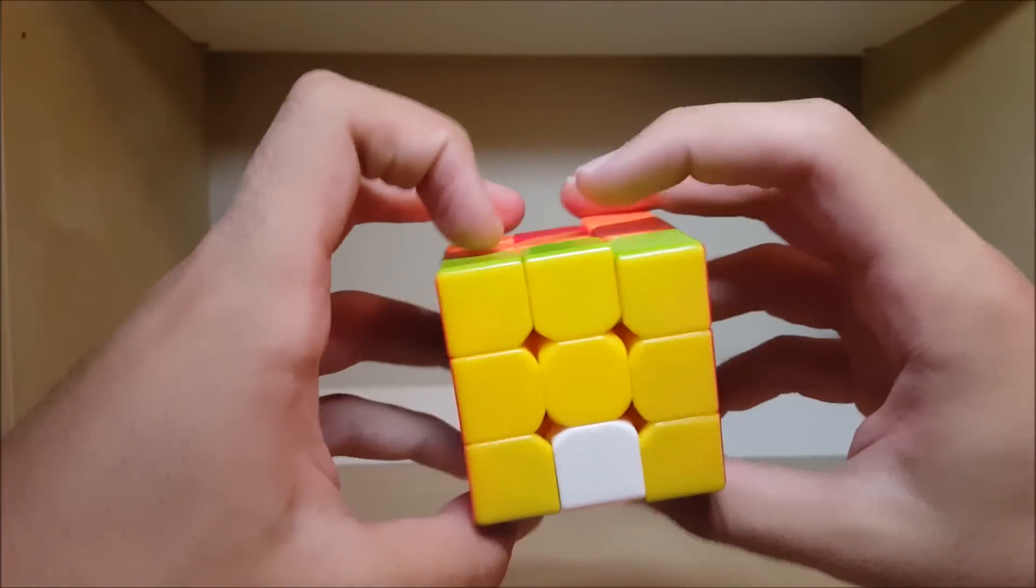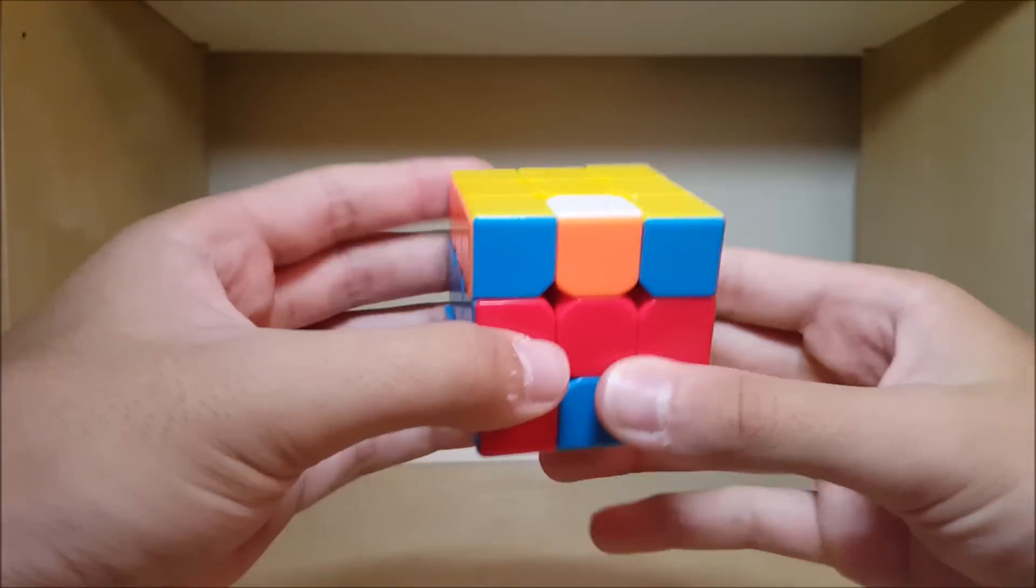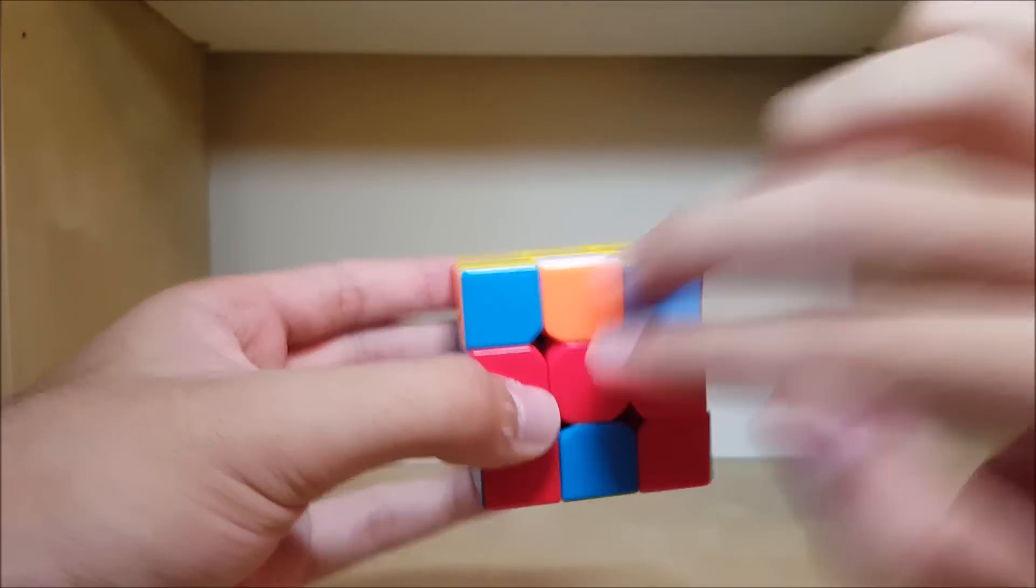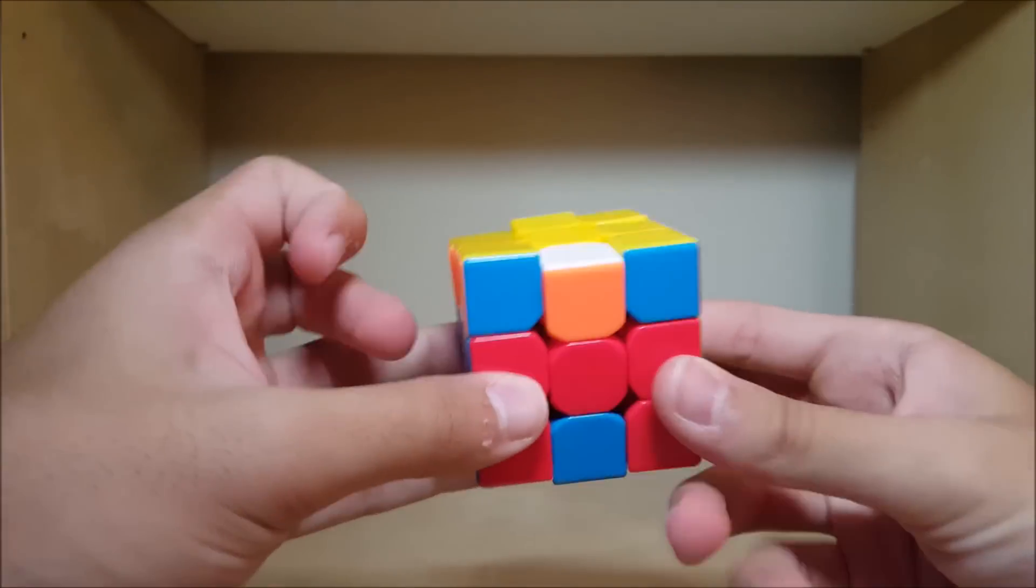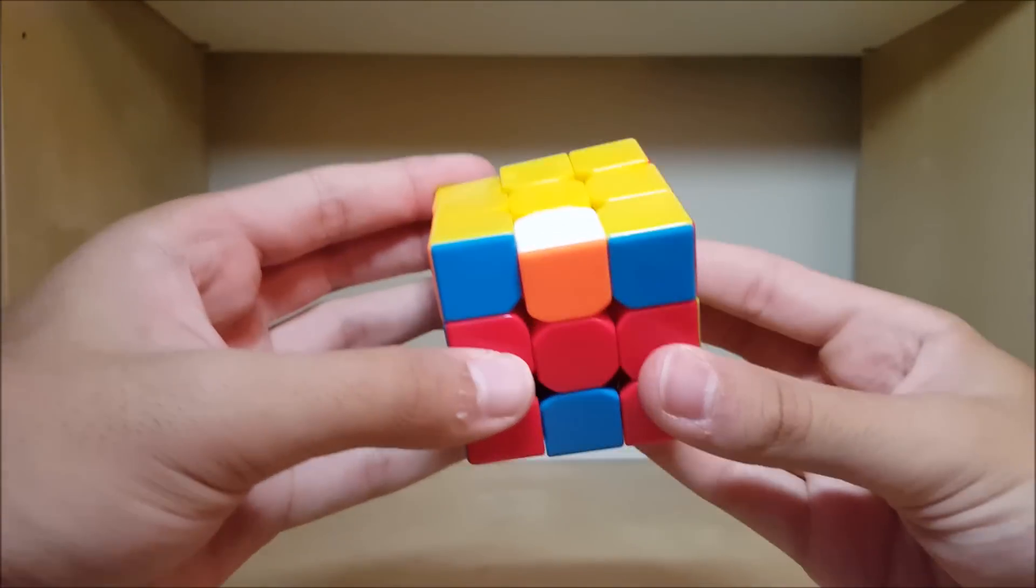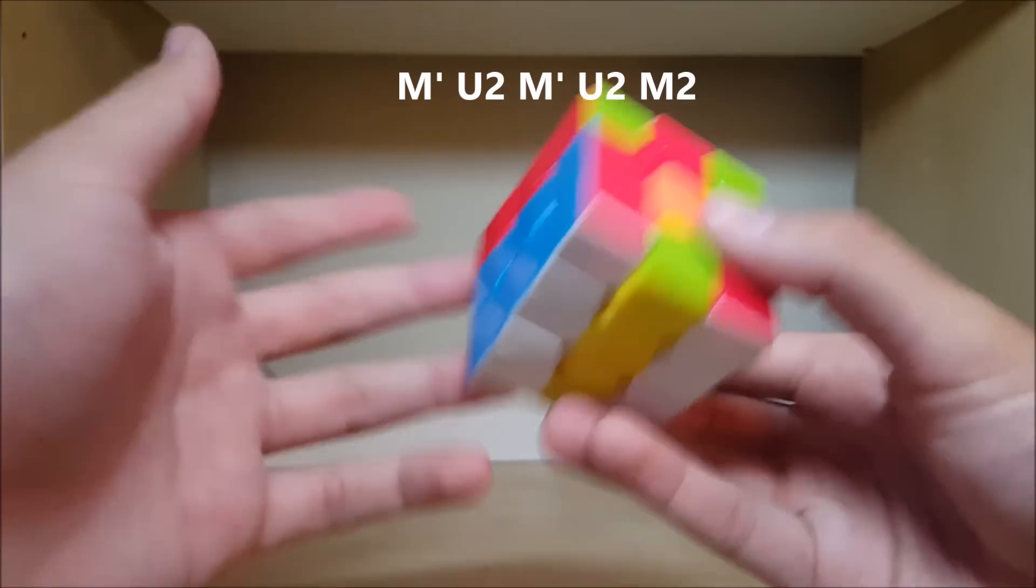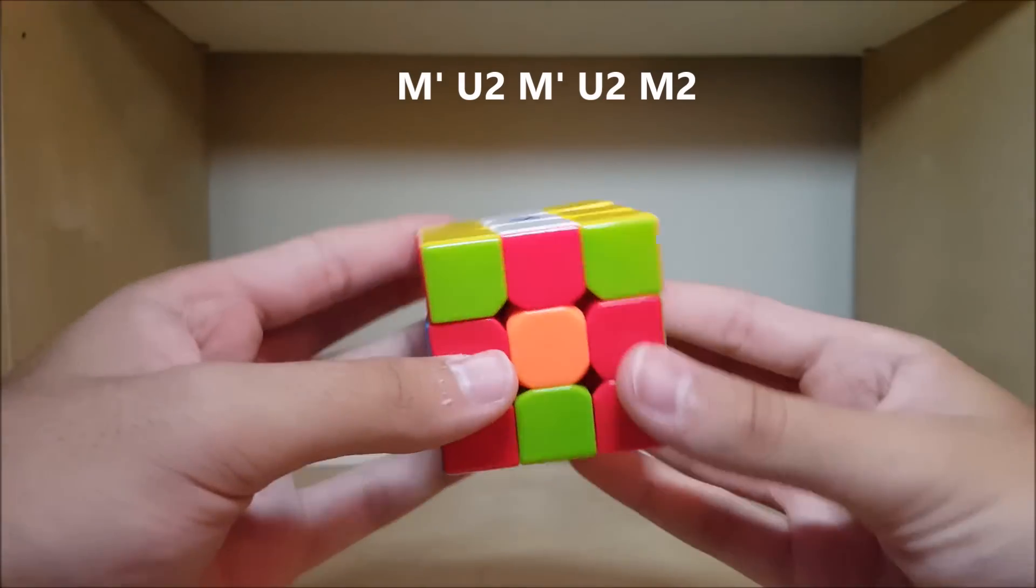Here's the very last case. Once again we have this in the back. This time these are matching and this is the front. Recognized by these are a line and these two are opposite. Usually you do M U2 M. So you do the exact opposite of that. Once again M' U2 M'. Oh and by exact opposite I mean inverse. So I should have said that from the beginning. But anyways, just do that.